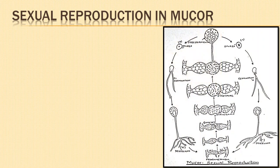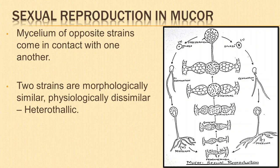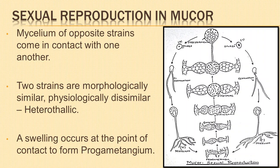We shall now study about sexual reproduction in Mucor. Sexual reproduction takes place when hyphae from different mycelia of opposite strains come in contact with one another. The two strains are morphologically similar but physiologically dissimilar, and hence regarded as heterothallic. When the plus strain and the minus strain come in contact, a swelling or protuberance occurs at the point of contact.